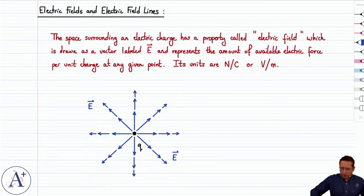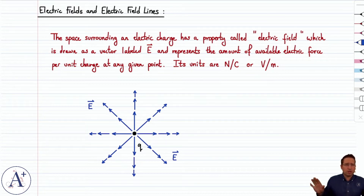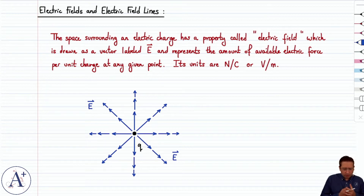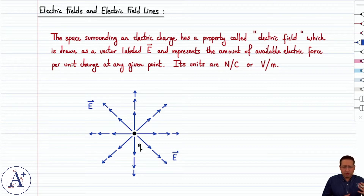Here I have a point charge Q, and I've drawn its electric field. We will go over this in detail in a separate video. Let's just agree for now that the electric field created by a positive point charge Q points away from that point charge — it's radially outward. The vectors get shorter with distance because the magnitude of the electric field decreases with distance from the point charge.